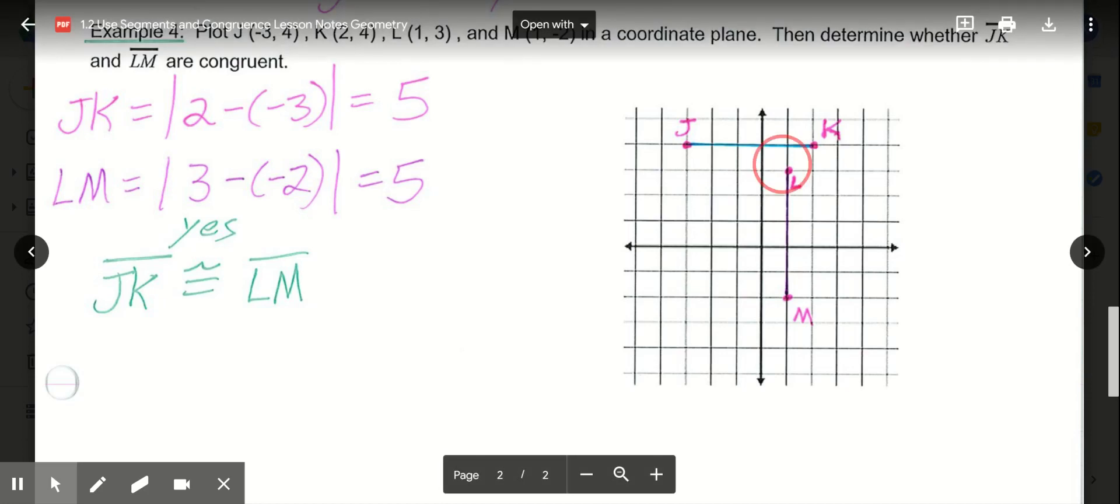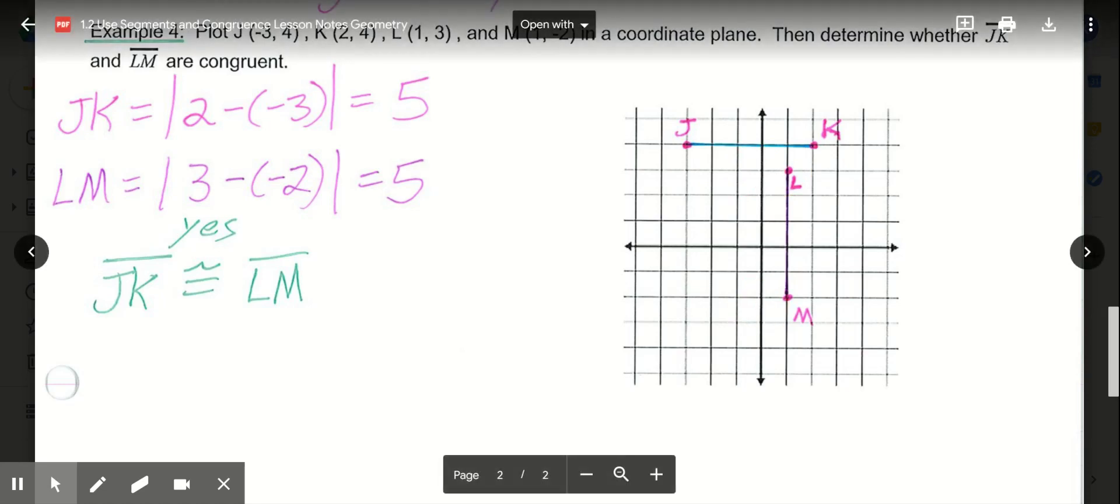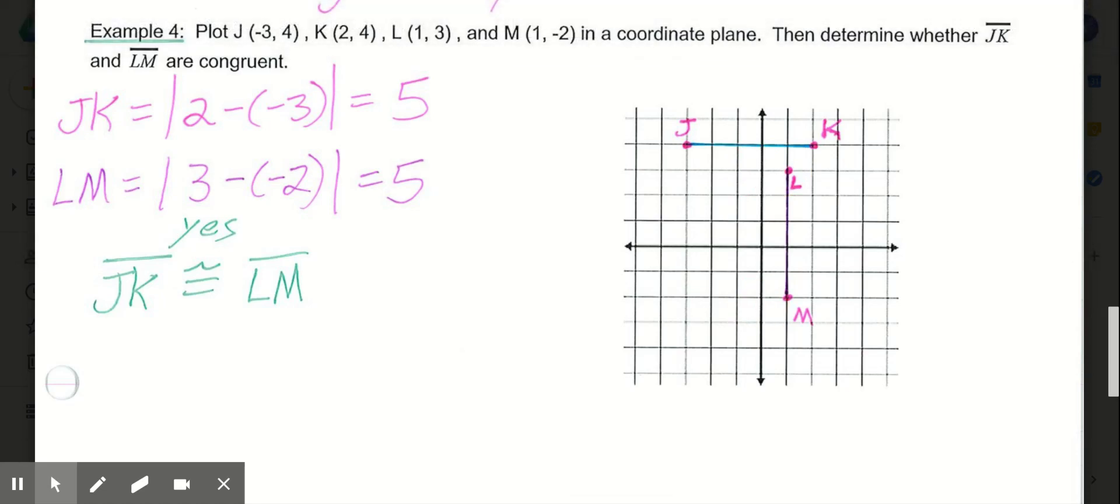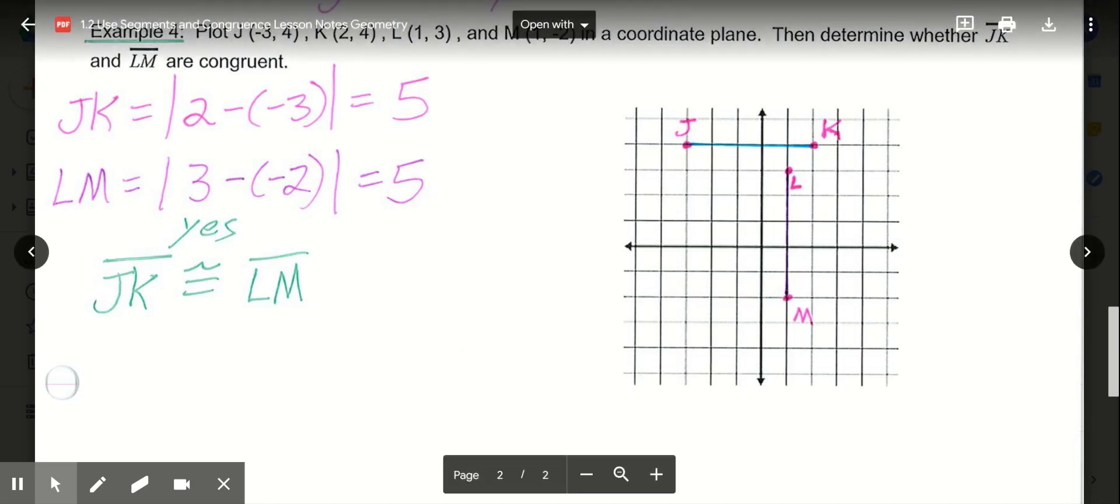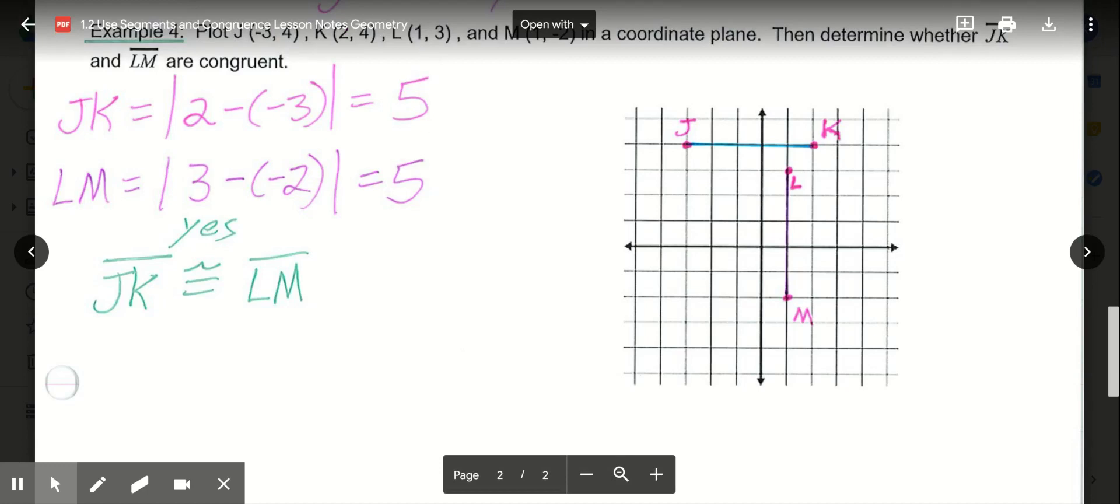For LM, it goes vertical, but we know they're both over the same amount. So if I figure out how high up L is, and how low M is, their Y coordinates, I can then subtract and use the absolute value to get the distance. So L was at a positive 3, M was at a negative 2. So 3 minus a negative 2, that also gives us a distance of 5. So they are the same length, meaning they are congruent. So we can say, yes, segment JK is congruent to segment LM.